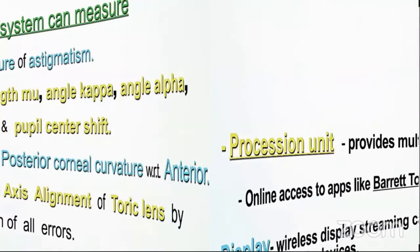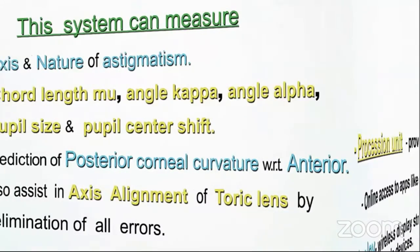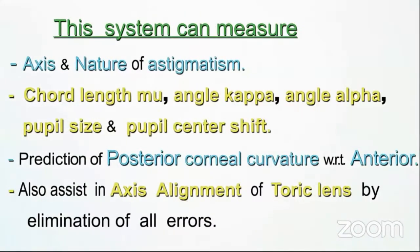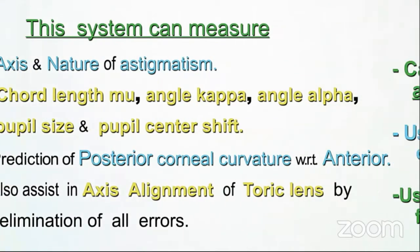This system can measure the axis and nature of astigmatism, chord length mu, angle kappa, angle alpha, pupil size, and pupil center shift. It also provides prediction of posterior corneal curvature with respect to anterior curvature, and assists in axis alignment of the toric lens by eliminating all errors.